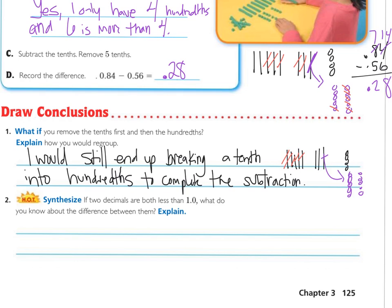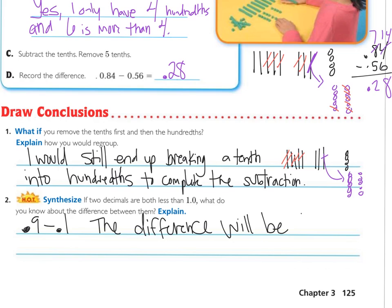The next question says: if two decimals are both less than one, what do you know about the difference between them? That means they would be something like nine-tenths minus another value nine-tenths or less. We know the difference will be less than one whole, because if the greatest number we're subtracting from is less than one, the difference between them is going to be less than one.